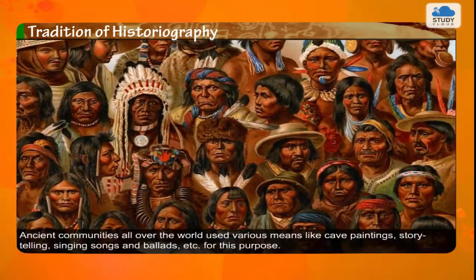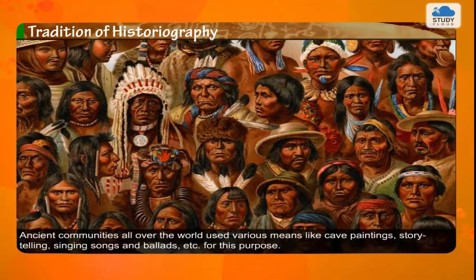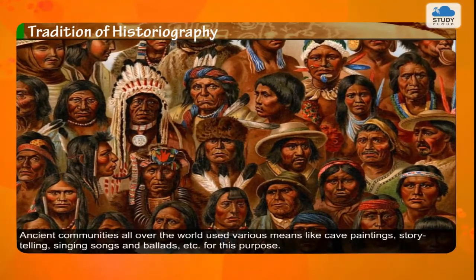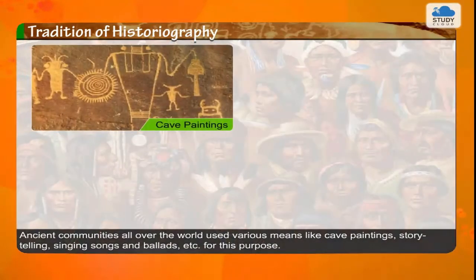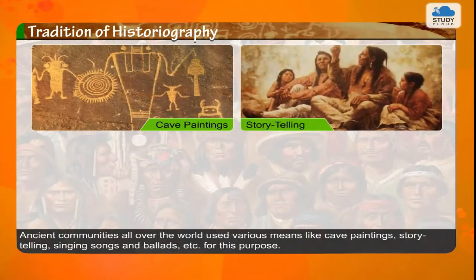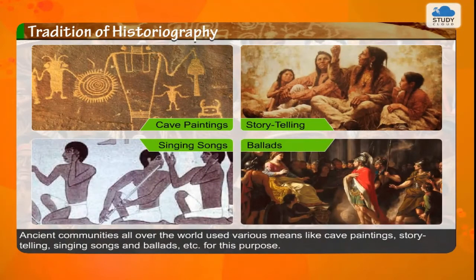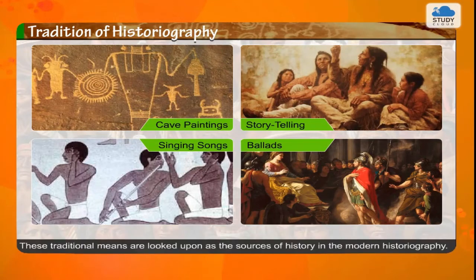Ancient communities all over the world used various means like cave paintings, storytelling, singing songs and ballads, etc. for this purpose. These traditional means are looked upon as the sources of history in modern historiography.